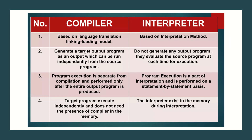Now let us discuss the differences between compiler and interpreter. The compiler is based on a language translation, linking, and loading model — it is a language translator that also links and loads. But the interpreter is based upon the interpretation method, which processes the code line by line. Second, the compiler generates a target output program that can run independently from the source program. But the interpreter does not generate any output program; it evaluates only the source program at the time of execution.